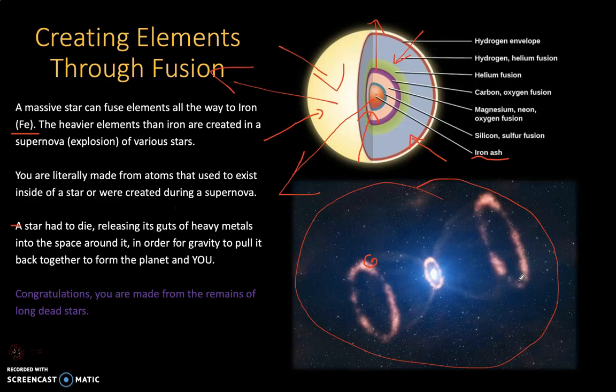They come from the fusion reactions going on inside of supermassive stars. Now our sun, it's not particularly large, it's pretty ordinary, it's a main sequence star. So it's pretty much only going to fuse up to helium, maybe a bit of lithium, and not be able to fuse past that. So our sun is not particularly special in that regard.